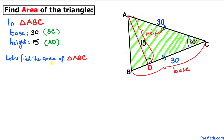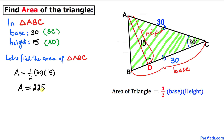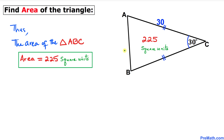Now let's go ahead and calculate the area of triangle ABC. The area of a triangle is always equal to one-half times base times height. So the area of triangle ABC is going to be one-half times 30 times 15, which gives us 225. Thus the area of triangle ABC turns out to be 225 square units.